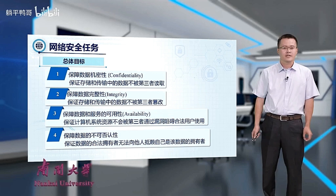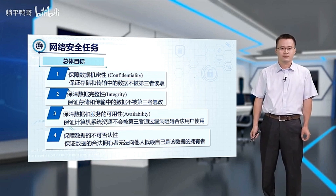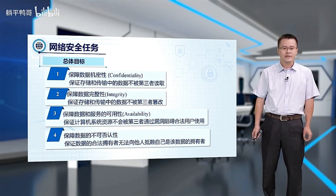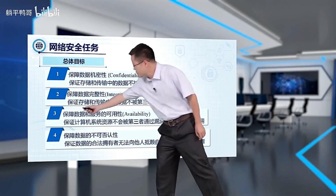First, let's examine confidentiality. Confidentiality means preventing third-party access during data transmission. Data integrity ensures data isn't altered by third parties during transmission.